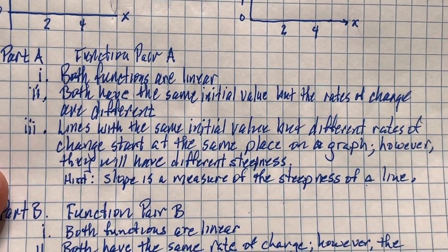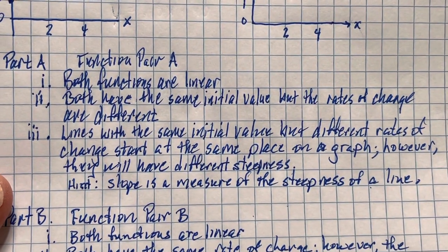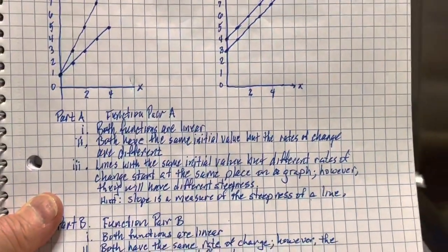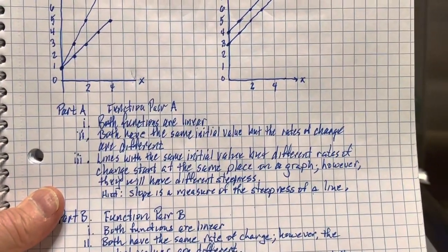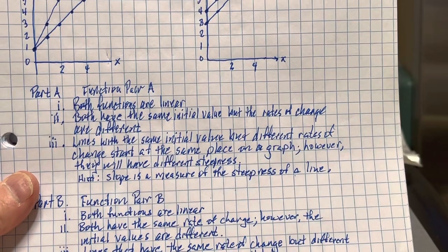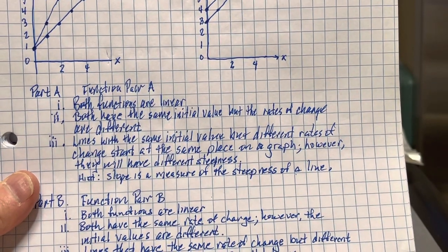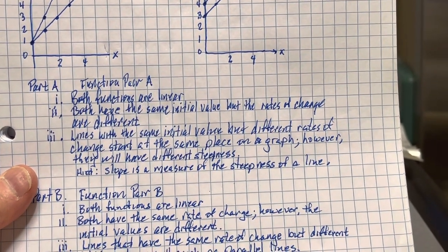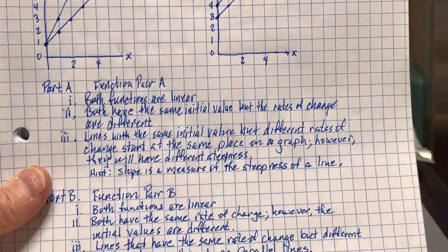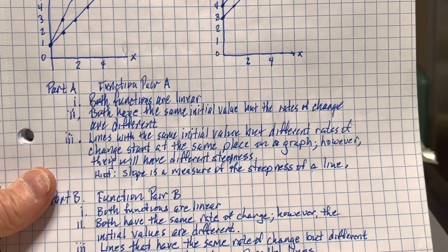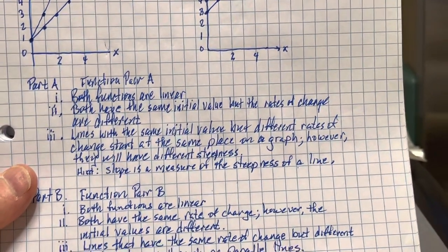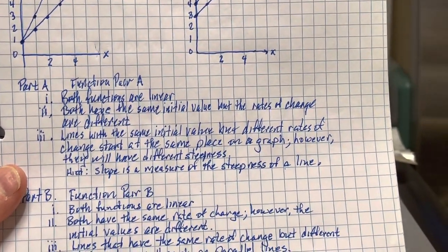For function pair A: both functions are linear. Both have the same initial value, but the rates of change are different. Lines with the same initial value but different rates of change start at the same place on the graph but have different steepness. Remember, slope is simply a measure of the steepness of a line.